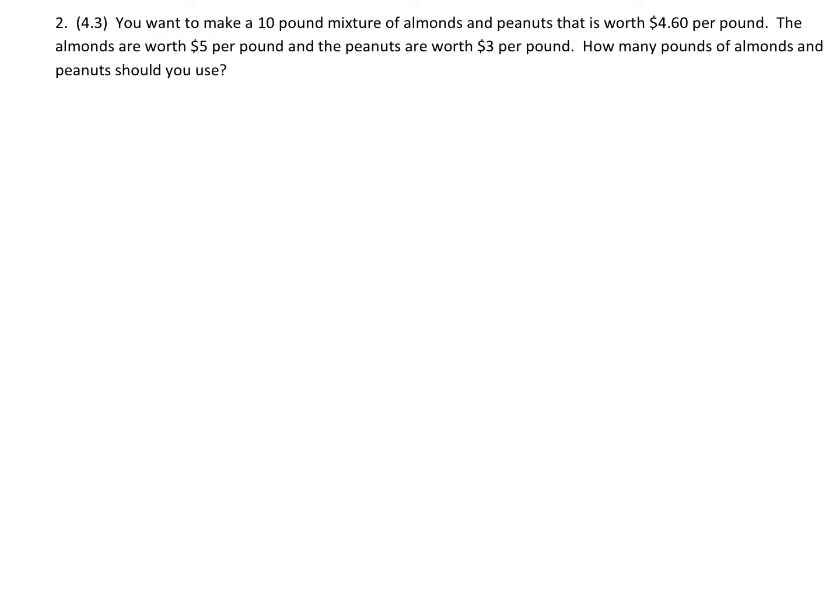You want to make a 10 pound mixture of almonds and peanuts that is worth $4.60 per pound. The almonds are worth $5 per pound and the peanuts are worth $3 per pound. How many pounds of almonds and peanuts should you use?